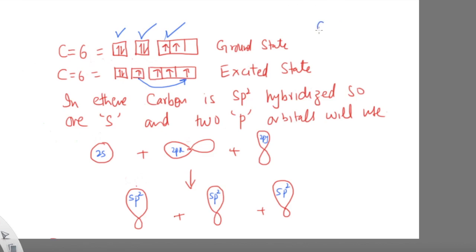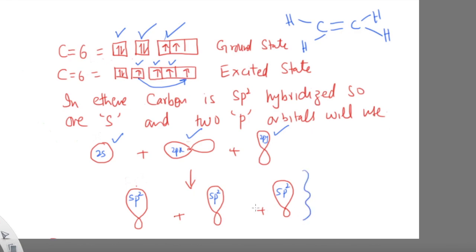In the structure of ethene, each carbon atom is sp2 hybridized, meaning the 2s, 2px, and 2py orbitals are used in sigma bond formation. These three atomic orbitals combine with each other to form three sp2 hybrid orbitals. This whole process applies to the first carbon; for the second carbon you repeat the process. Each sp2 orbital from one carbon makes a sigma bond with the sp2 orbital of the second carbon.